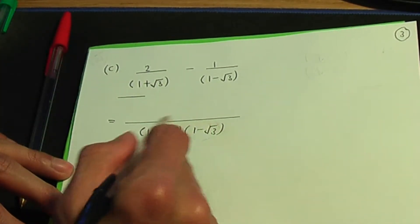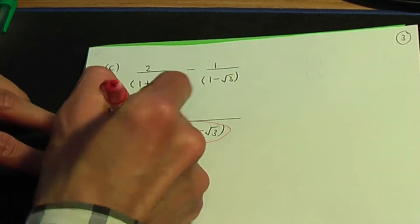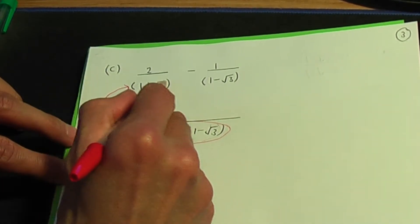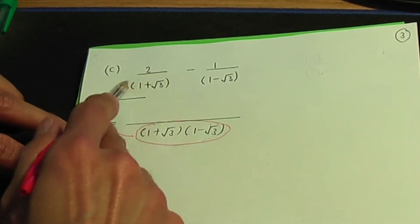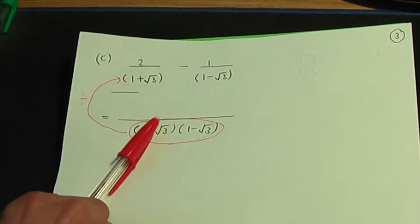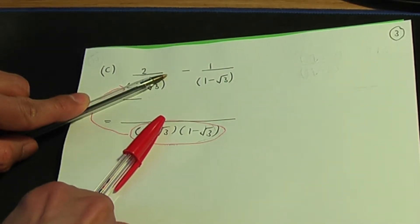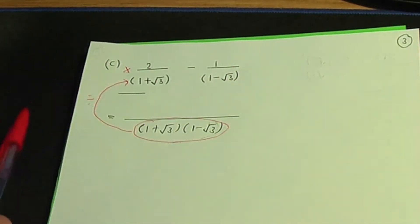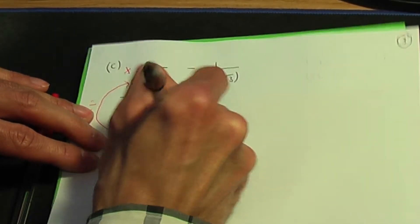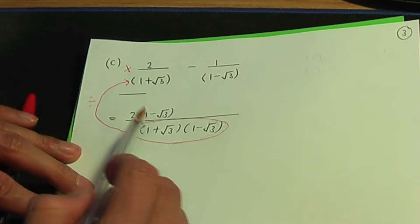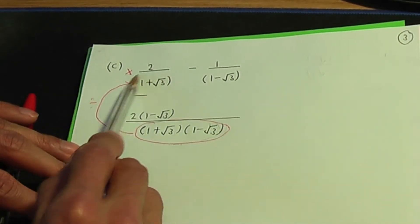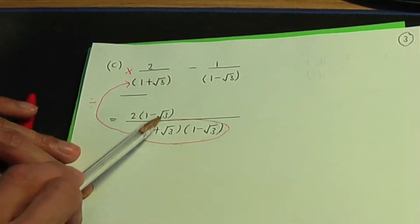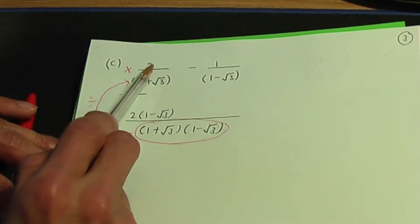When you divide this common denominator by the original denominator — this divided by one plus root three — the like terms cancel through division, giving you one minus root three. One minus root three times two, the top term, gives two times one minus root three. Minus in the middle. Same concept: when you divide the common denominator by one minus root three, the like terms cancel giving one plus root three. One plus root three times one is one plus root three.